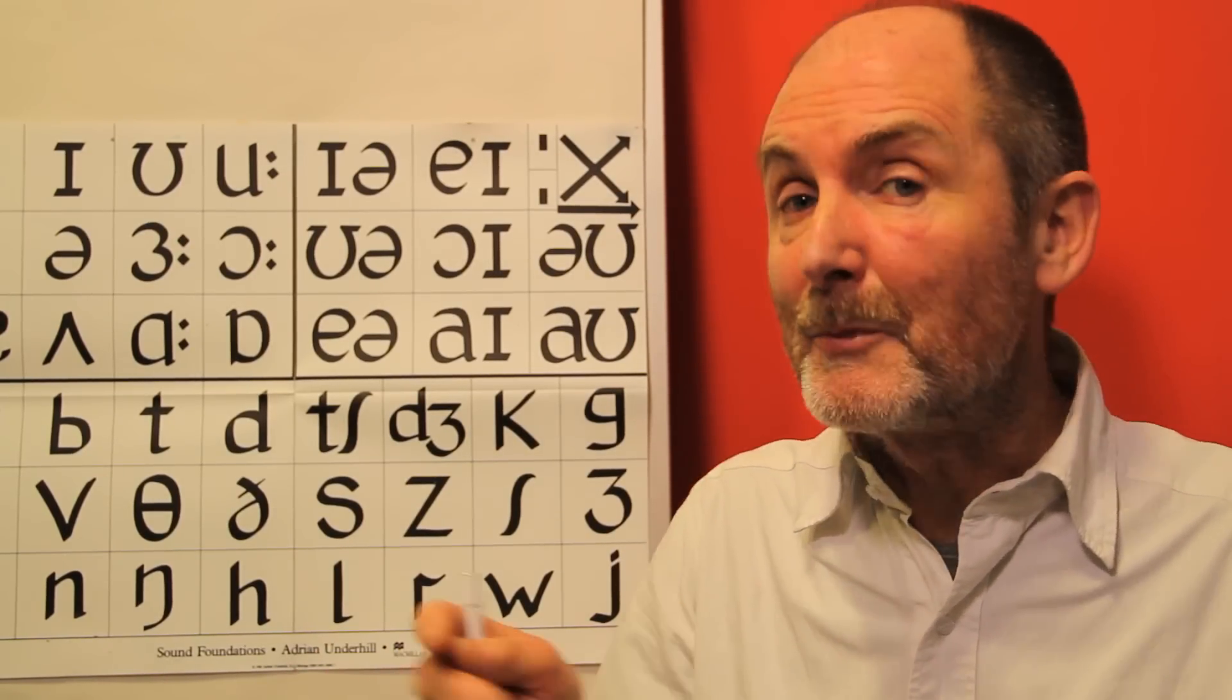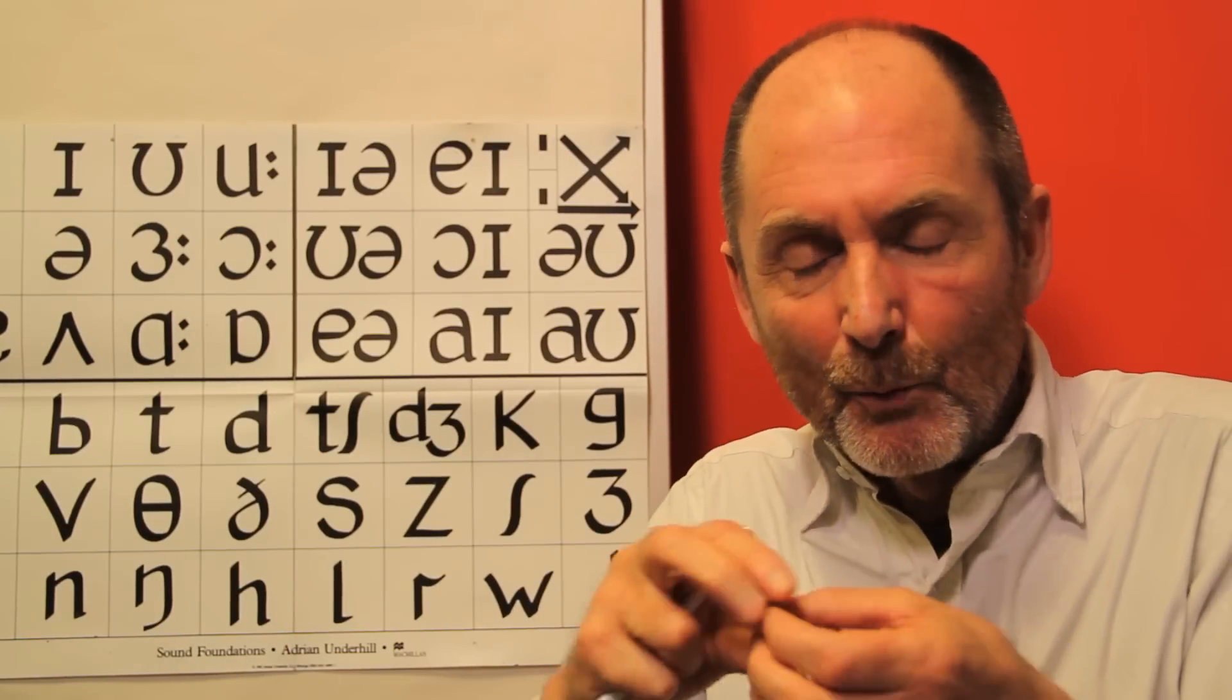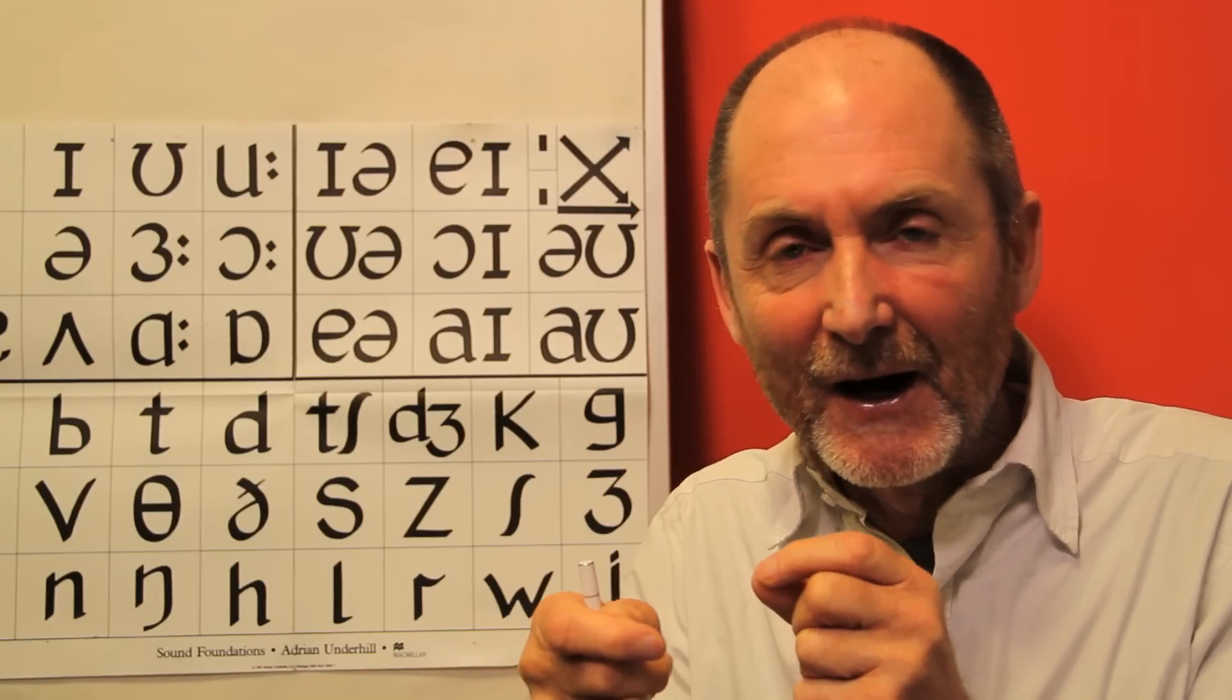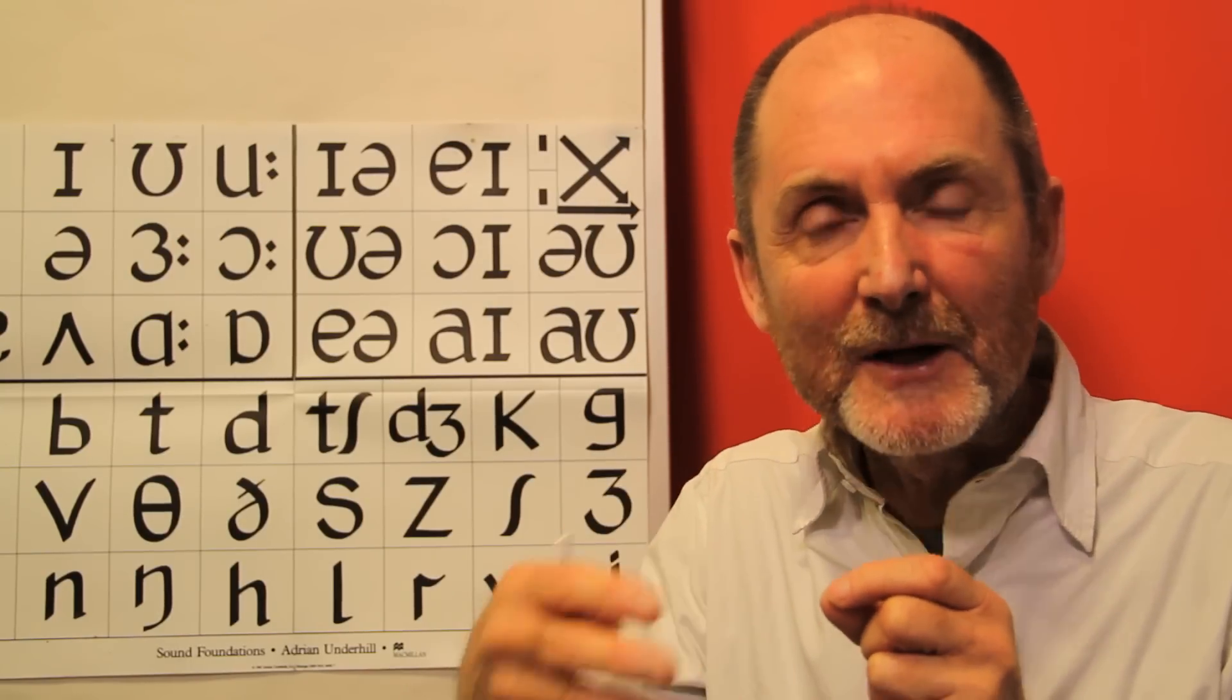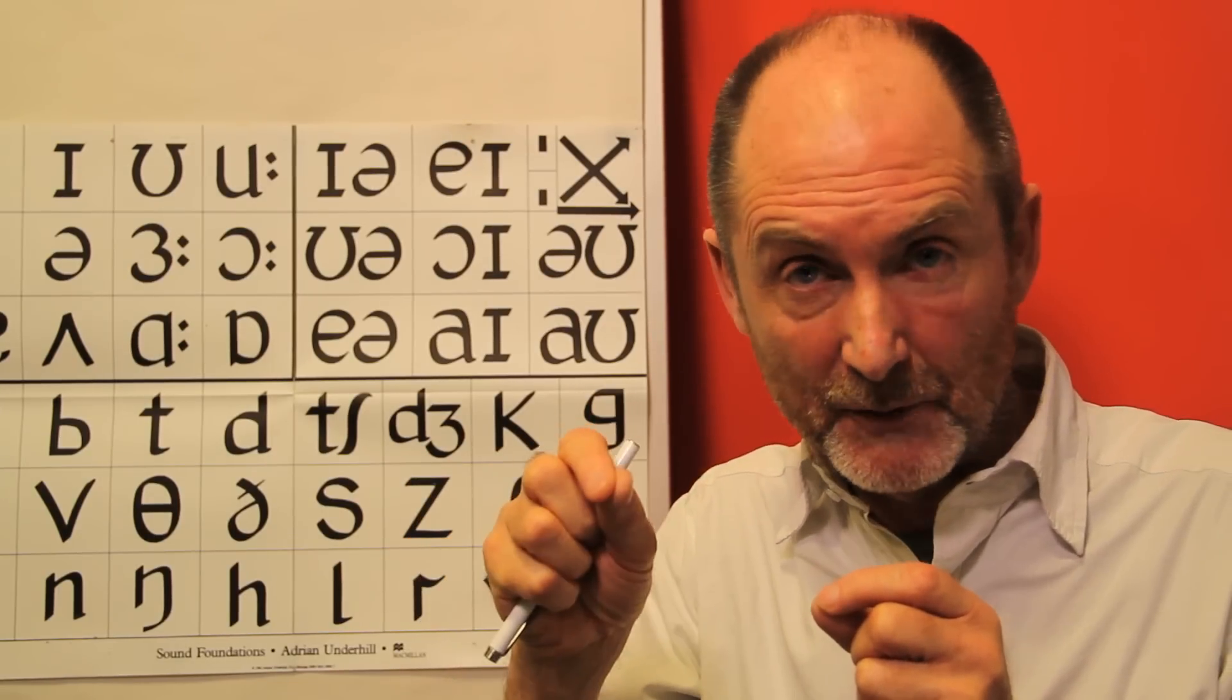Level three is when we put the words together to make connected speech. And again, the words kind of join at the edges. There are certain gaps here and there. There's a kind of speaker's rhythm and overall there is an intonation. And that's level three.